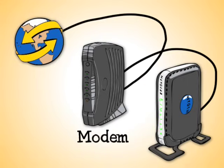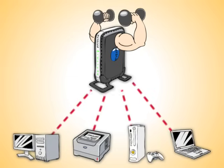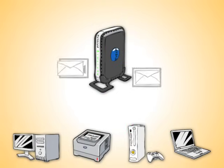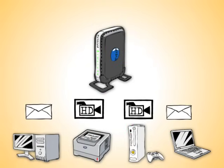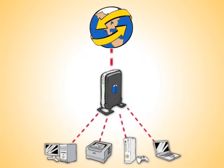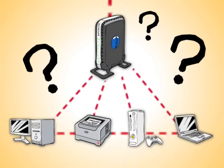A router also connects to the internet outside your home via a modem that can be provided by your DSL or cable internet provider. A router is always at work, managing the tons and tons of information your computers and devices send and receive, and controlling which computers and devices get what information and when. So how does a router actually send information from the internet to your computers and devices, and how does it enable your computers to share information with each other?